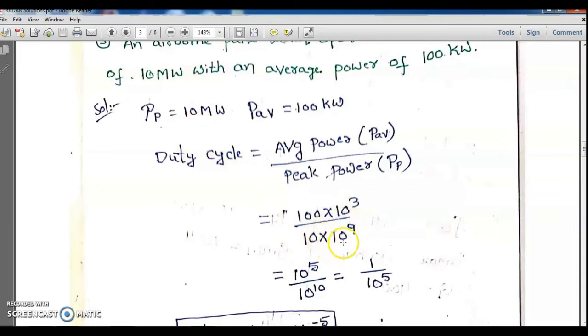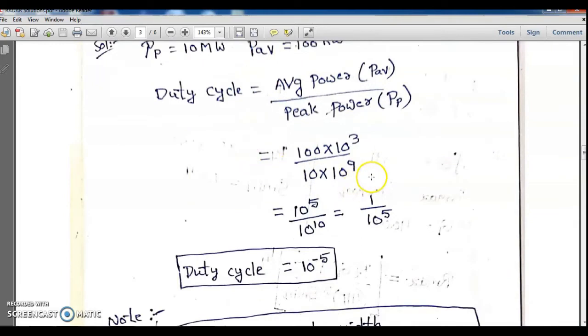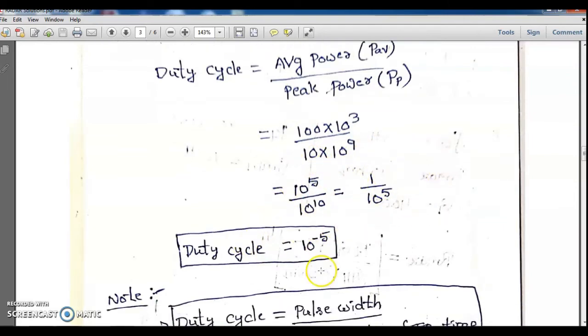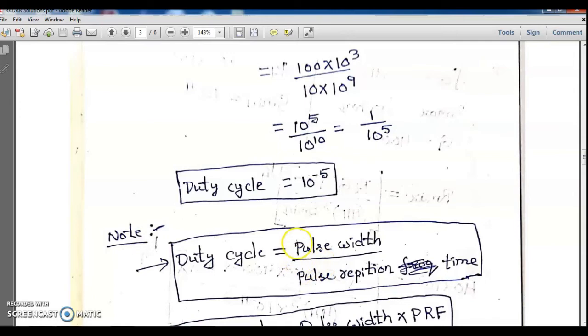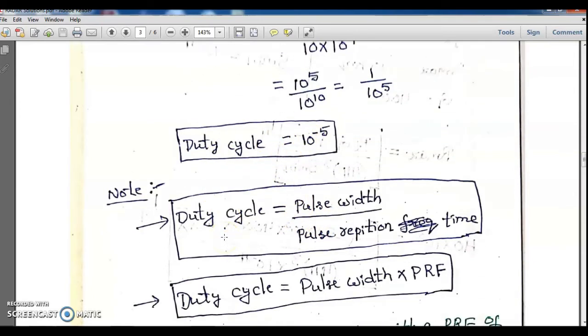10 gigawatts. I am taking gigawatts here, not megawatts - please correct it. By simplifying this, we can find the duty cycle is 10 to the power minus 5. This is the duty cycle.